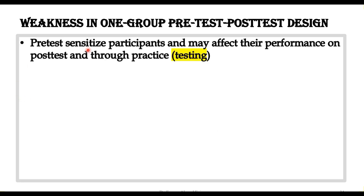What are the weaknesses of the one-group pre-test post-test design? The first is that because a pre-test is involved, the group is taking a test two times — once for the pre-test and once for the post-test. Because of taking the pre-test, this pre-test sensitizes participants, and their experience with the pre-test may affect their performance on the post-test through practice. So it becomes difficult to determine whether any improvement was due to the treatment or due to practice on the test.